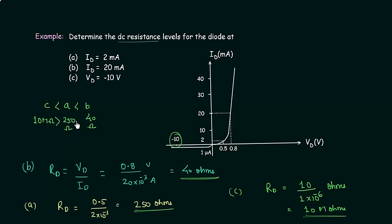From this numerical we can see that on increasing the diode current, the diode resistance decreases. So the diode resistance is inversely proportional to the diode current. In the next lecture we will discuss AC resistance of PN junction diode.